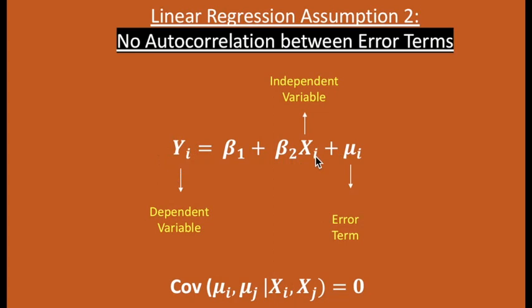The autocorrelation assumption requires that there shouldn't be any correlation between the error terms. Where correlation is noticed between the error terms, the assumption of autocorrelation is violated. In other words, the covariance between our error term, given any values of the independent variable, should be equal to zero.